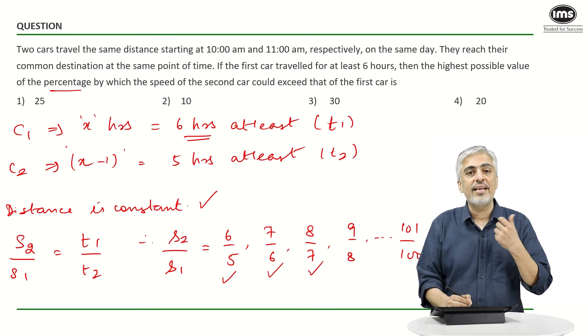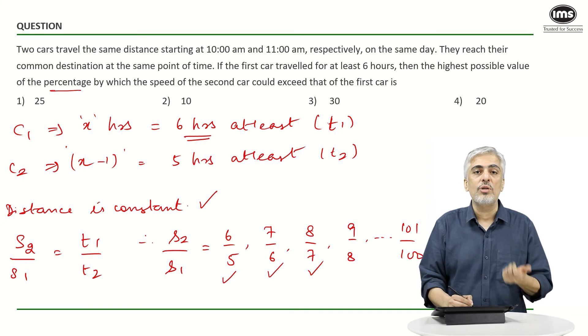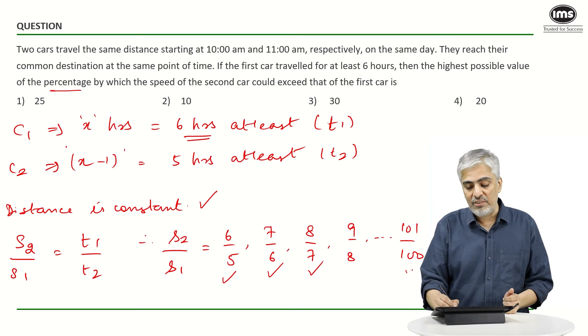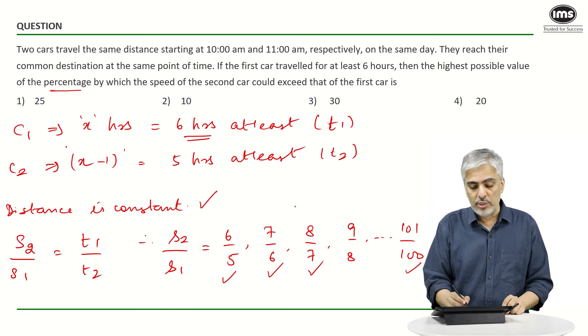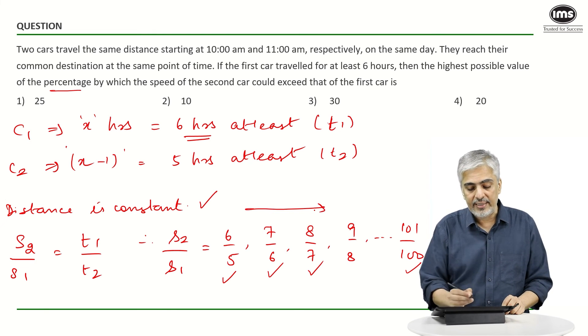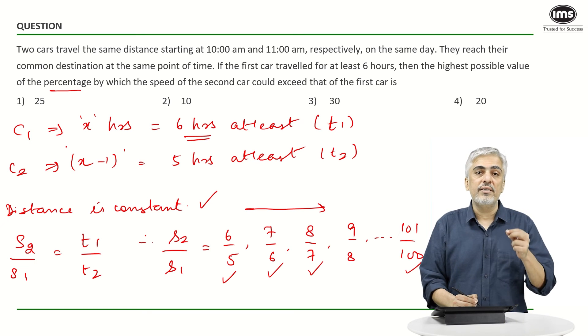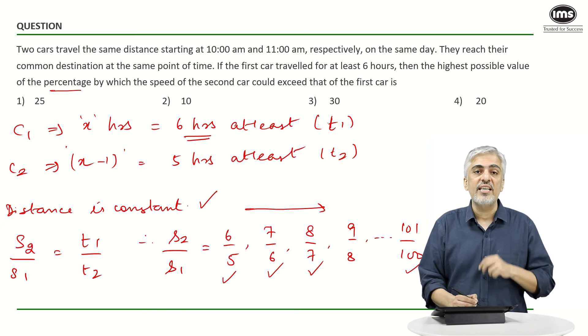Eight upon seven - the extra part is one upon seven, so it will be 14.28. And same way, if you go here, 101 upon 100, the extra part is only one upon 100, which is one percent. So can you see, as you're going ahead, the difference - the percentage difference in their speeds - is decreasing.